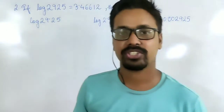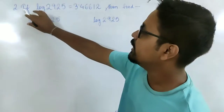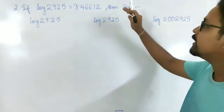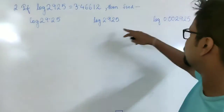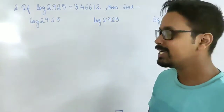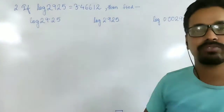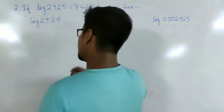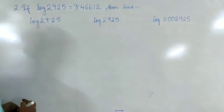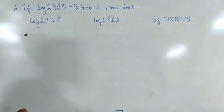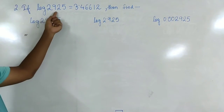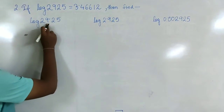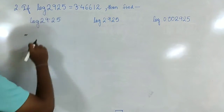Now we move to Question 2. A value is given: log of 2925 is 3.46612. We need to find related logarithm values. The approach is to convert each given number into 2925 multiplied by some power of 10, so that we can use the given value of 3.46612.